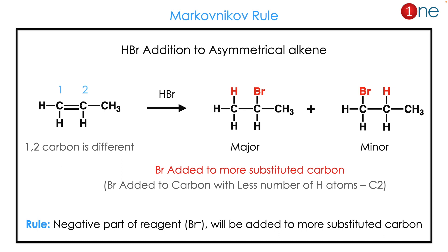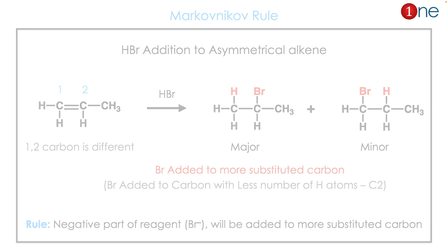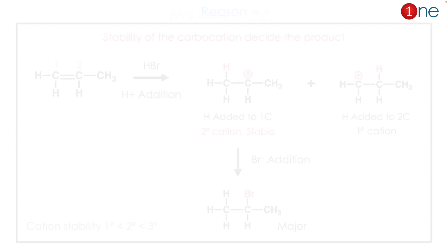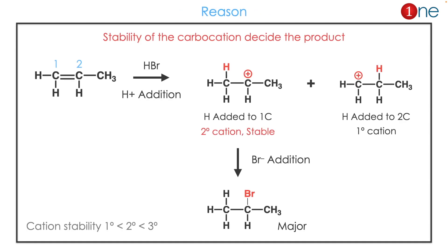The rule is: the negative part of the reagent — here it is bromine — will be added to the more substituted carbon. The reason for this particular selectivity is carbocation stability. The tertiary cation and secondary cation are more stable than a primary cation.